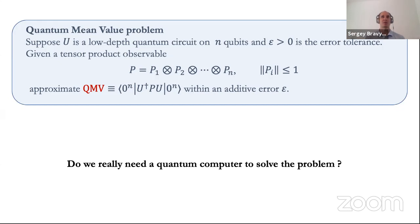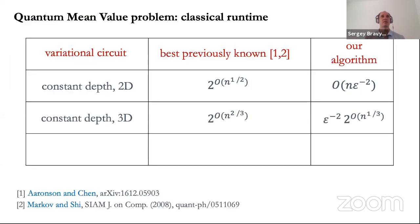What we try to do is isolate this step and understand its computational complexity. This leads to the quantum mean value problem: given a low-depth quantum circuit U acting on m qubits and some observable P which is a tensor product of single-qubit observables, approximate the expected value of this observable on the output state of U with some specified precision epsilon. The question is: do we really need a quantum computer to solve this problem? This table shows the runtime of a classical algorithm that solves the quantum mean value problem, depending on circuit depth and qubit connectivity.